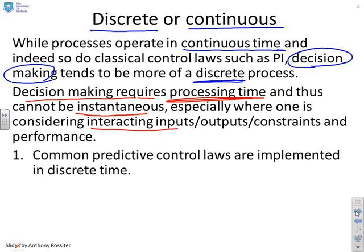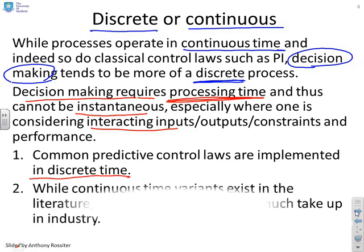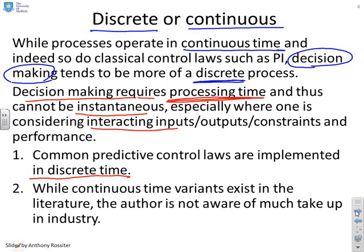Therefore, this is what you end up with. Common predictive control laws are implemented in discrete time. Now you will find if you look around there are some continuous time variants in the literature, but to some extent they're, I won't quite call it trickery, but you'll find they also have discrete decision making even though the way they're expressed is in continuous time. So in practice, they all in fact do the decision making in discrete time.